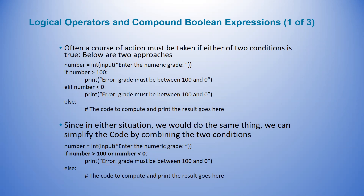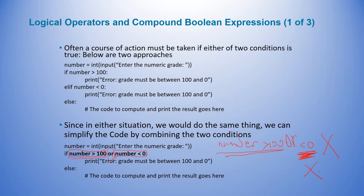Notice that 'number > 100' is a complete Boolean expression and 'number < 0' is a complete Boolean expression. You cannot write 'number > 100 or < 0' — that is not a complete Boolean expression. 'Or' must connect two or more complete Boolean expressions. This is a complete expression; 'or < 0' alone is not. That's something you must remember.